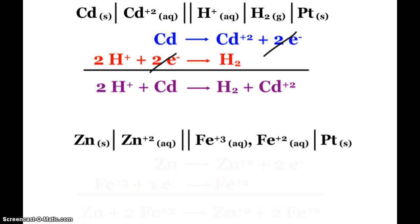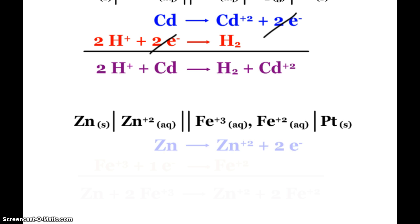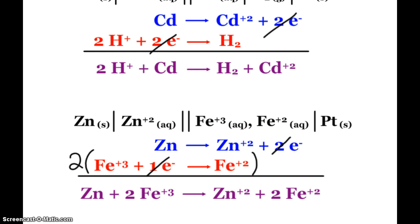Same thing down here. Zinc is at the anode. Zinc is losing two electrons. And then, here you see another example where iron is not turning into solid iron, so we don't have an iron electrode. Iron three is just being reduced to iron two, and that is happening in the presence of a platinum electrode. Now, here, in order for me to combine these two reactions, I'm going to have to double the second reaction, so that my electrons will cancel out. And when I do that, I end up with that overall reaction.